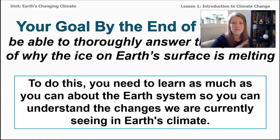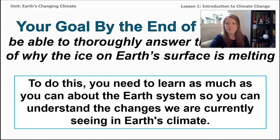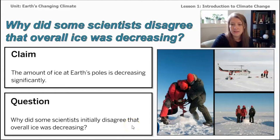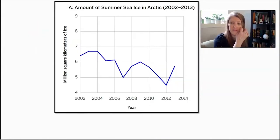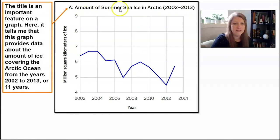To do this you'll need to learn as much as you can about the Earth's system so that you can understand the changes that we're currently seeing in the Earth's climate. Your first task as a student climatologist is to review some data collected about ice melting or decreasing at the poles, and it's important to be skeptical and review data carefully. The question I want you to keep thinking about when looking at the data is: why did some scientists disagree? There was disagreement, so let's take a look at why that is. Let's take a look at this graph.